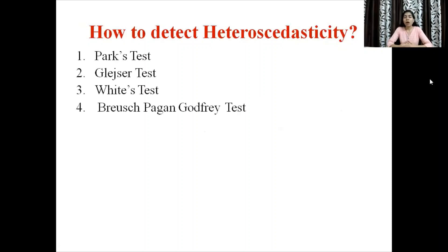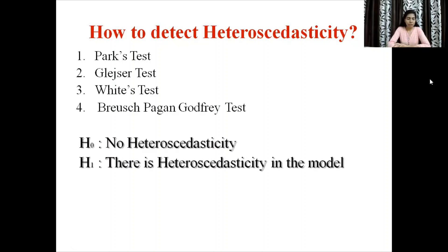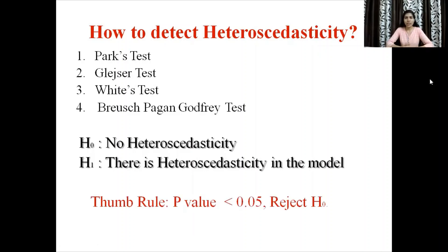Now, the question is how to detect heteroscedasticity. In literature, there are various methods like Parke's test, Glejser test, White's test, and Breusch-Pagan Godfrey test, which is widely used. In case of heteroscedasticity, the null hypothesis states that there is no heteroscedasticity in the model, or the model is homoscedastic, and the alternative hypothesis is that there is a presence of heteroscedasticity. We conclude results by the thumb rule: if the p-value is less than 5% level of significance, that is less than 0.05, then we reject H0 — meaning there is heteroscedasticity in the model.